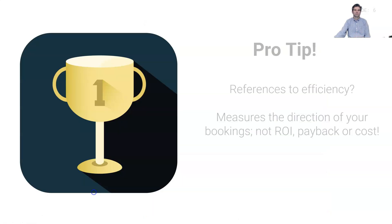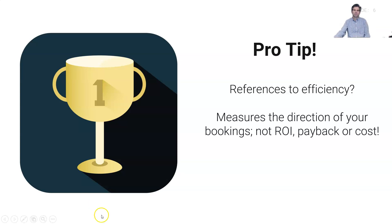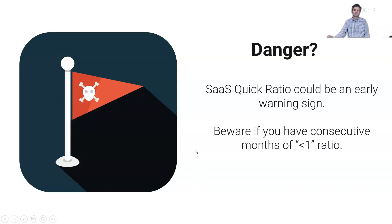Quick pro tip: the previous slide references efficiency, and you'll see that in articles on the internet about efficiency with the SaaS quick ratio. But I would say it's not really efficiency — there's nothing related to financial efficiency, payback, or ROI in this formula. Really, it's about the direction of our bookings: do we have net inflow of ARR, or do we have contraction within our customer base with new and existing customers?